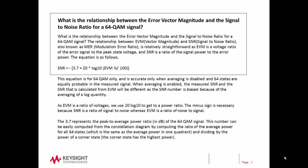What is the relationship between the error vector magnitude and the signal-to-noise ratio for a 64-QAM signal? The relationship between EVM, error vector magnitude, and SNR, signal-to-noise ratio, also known as MER, modulation error ratio, is relatively straightforward. EVM is a voltage ratio of the error signal to the peak state voltage, and SNR is a ratio of the signal power to the error power.